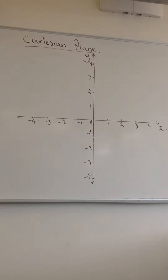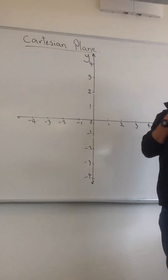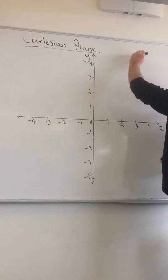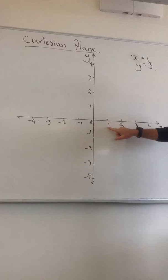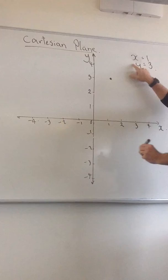Now on the Cartesian plane we can put coordinate points. So if we want to represent a value, let's say it's x equals 1, y equals 3. What we do is go across to x equals 1 and up to y equals 3. This would be the point representing that.